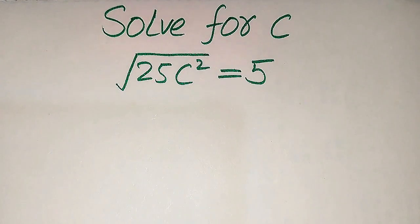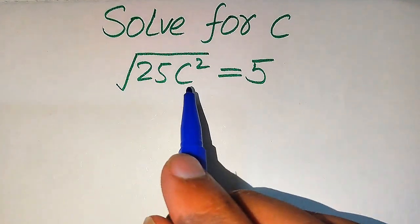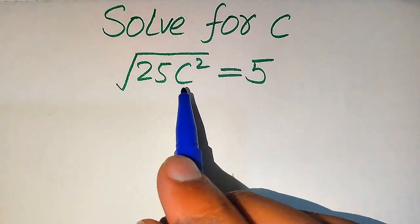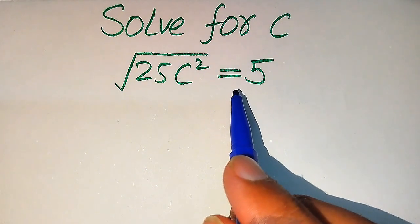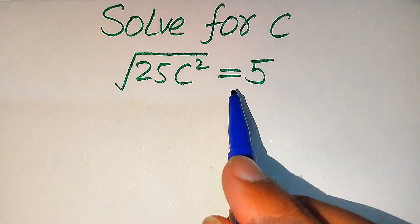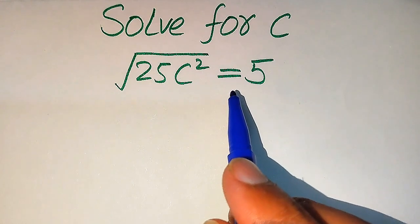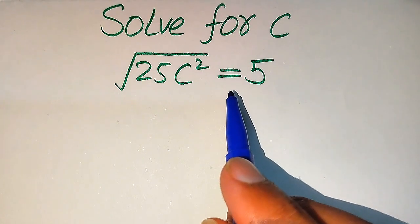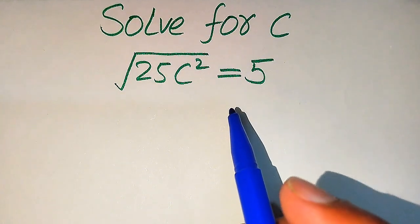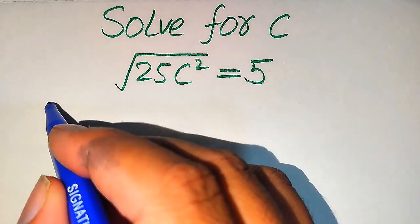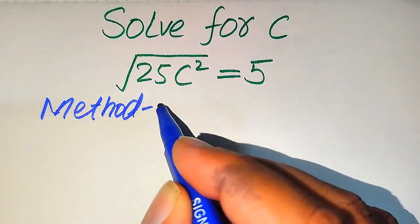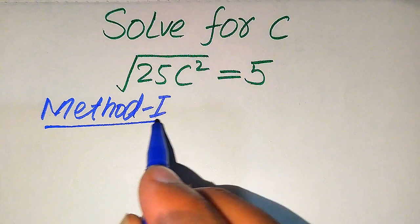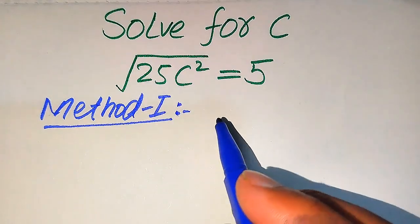Hello everyone. How to solve this problem: for the values of C, if we have the whole square root of 25 times C squared equals 5. We solve this problem using two methods. First we find all the roots of this equation, and at the end we verify which roots are solutions and which are extraneous. If you have another method in mind, please write it in the comment section.